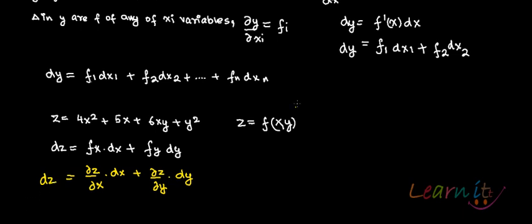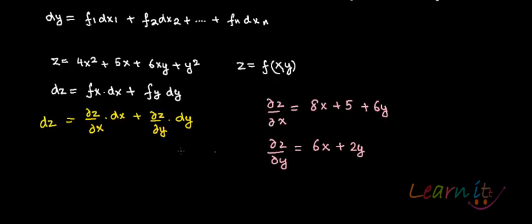So what is del z by del x? In this case del z by del x is that only x is variable and all other are constant. So it is 8x plus 5 plus 6y. And what is del z by del y? That would be 6x plus 2y. So we'll just substitute both of them here.